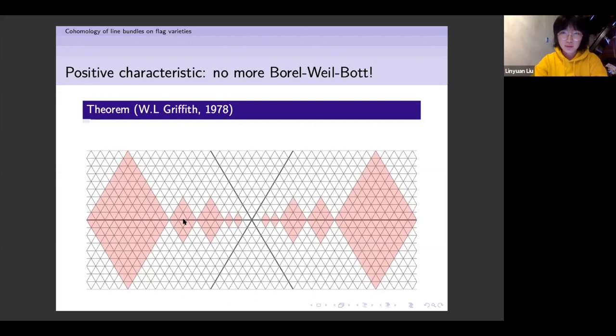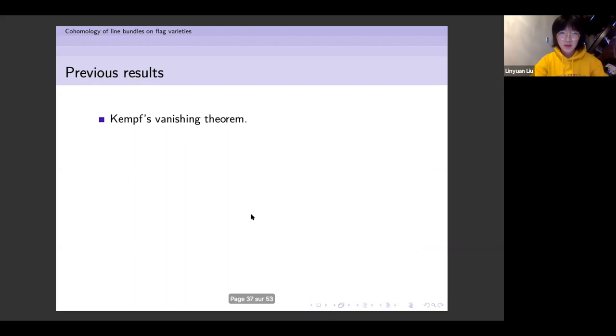In particular, we can see that the Borel-Weil theorem cannot be correct in positive characteristic, except in this very tiny p-restricted region. Let me list some of the previous results on this topic.